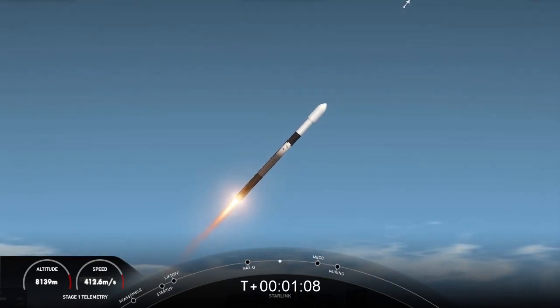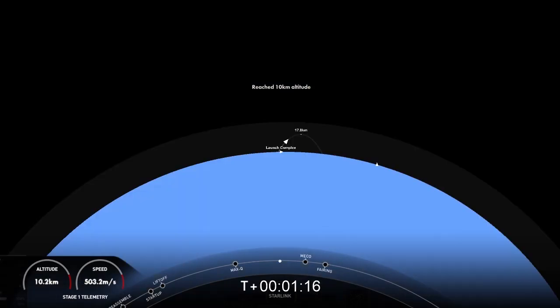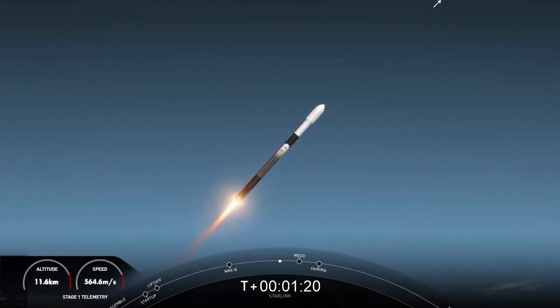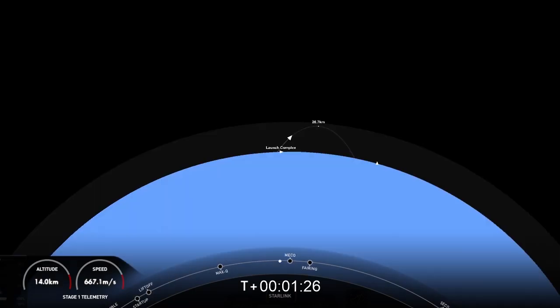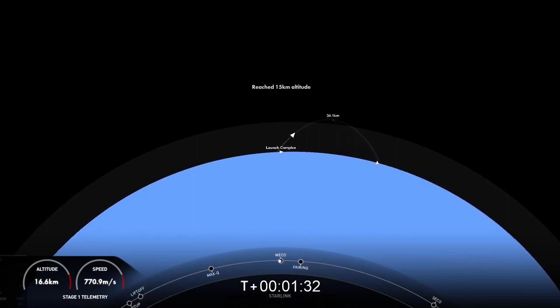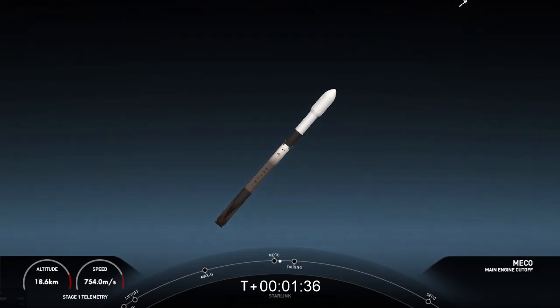First up, main engine cutoff. This is where all nine engines on the first stage will shut down in order to slow the vehicle down in preparation for stage separation. MECO. Stage separation confirmed.